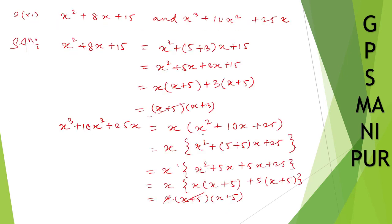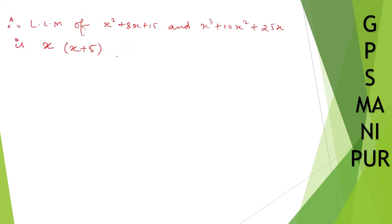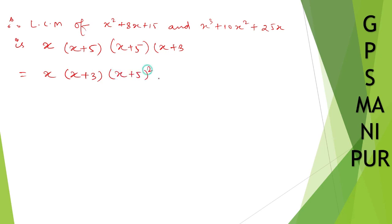Now (x plus 5) appears alone and (x plus 3) is also alone. So the LCM is x times (x plus 3) times (x plus 5) times (x plus 5), which equals x(x plus 3)(x plus 5) squared. That is the answer. Thank you so much, we will meet in the next video.